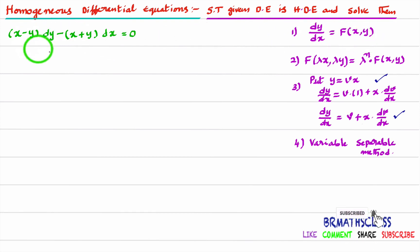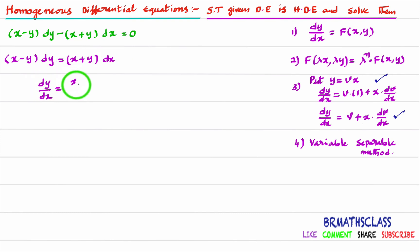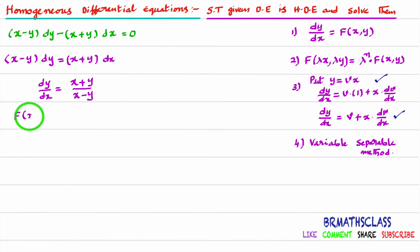This is the given differential equation. From this, I'll write dy/dx. Taking (x - y)dy to one side and (x + y)dx to the other, we get dy/dx = (x + y) / (x - y). So f(x, y) = (x + y) / (x - y).